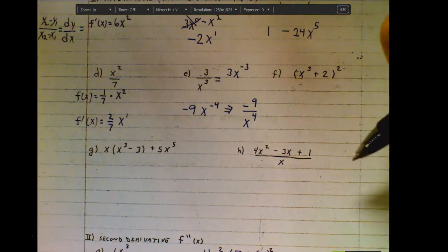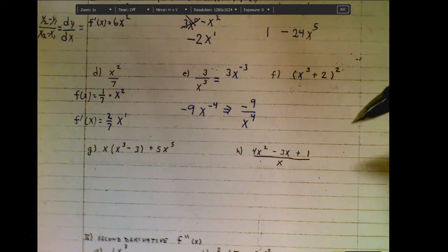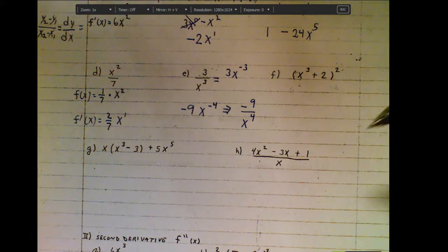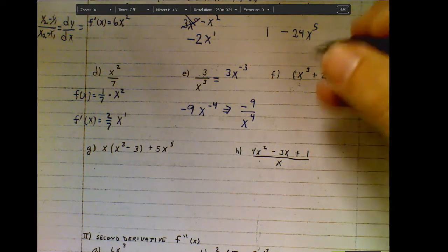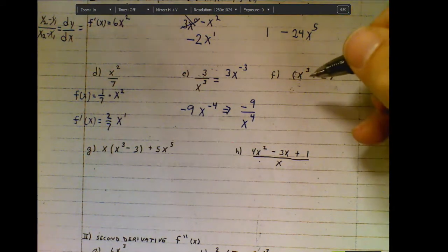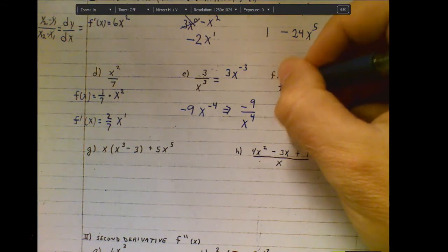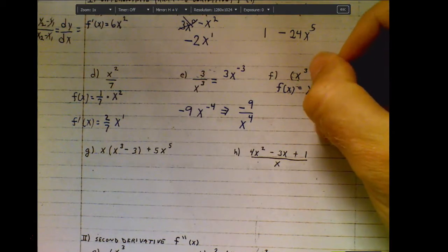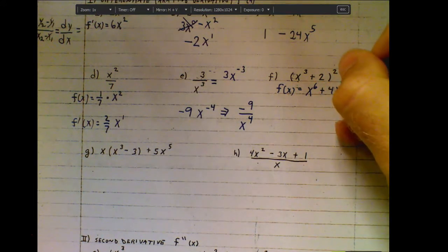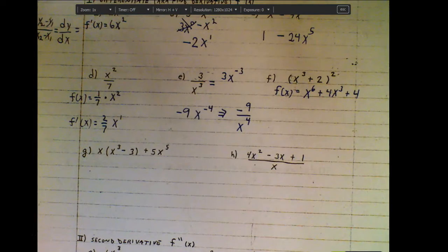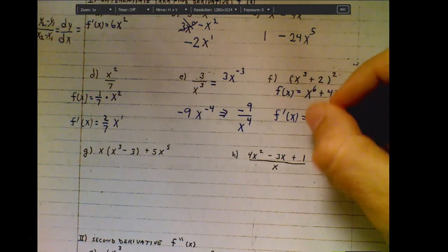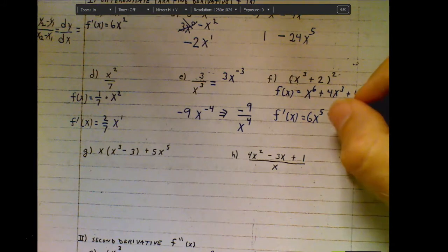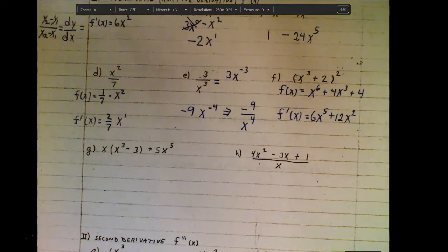For an expression like (x³+2)², we need to foil it in order to use the power rule, since there's another rule for this format that we're not learning. So to use the power rule, I need to separate out the terms. Foiling x³+2 times x³+2 gives x⁶+4x³+4. Now applying the power rule: six times one is six, subtract one from the exponent; three times four is twelve, subtract one from the exponent; constants go away — and that's our derivative.